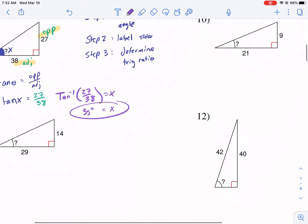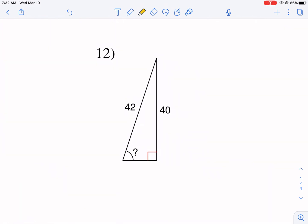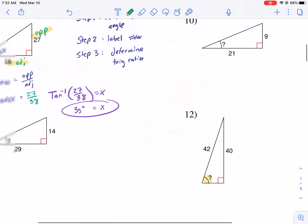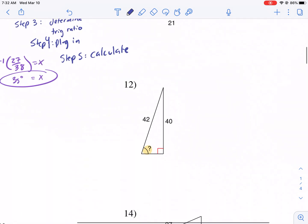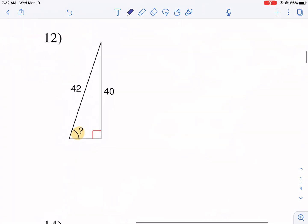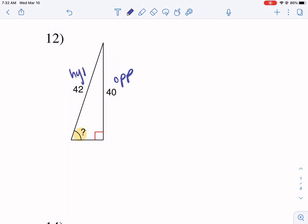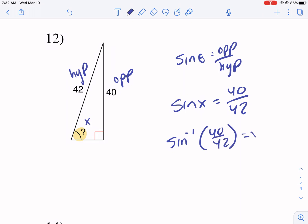Let's do another one. First thing: reference angle, boom, right there. Label the sides, number two. Determine trig ratio. We have opposite and hypotenuse, so we're going to be using sine of theta because that's opposite over hypotenuse. We're going to call it X. Sine of X is equal to 40 over 42. So I'm going to take the inverse sine of 40 over 42, and that's going to equal X. Inverse sine 40 divided by 42, and I get X equals approximately 72 degrees rounded to the nearest degree.